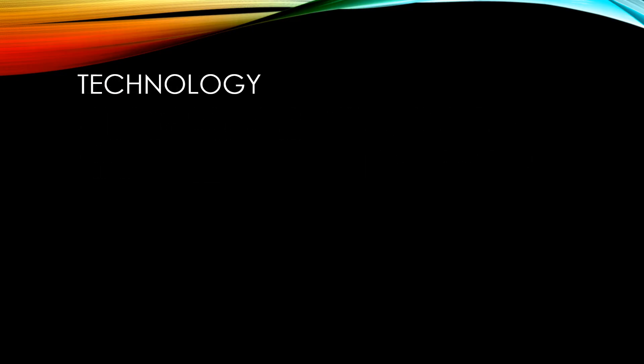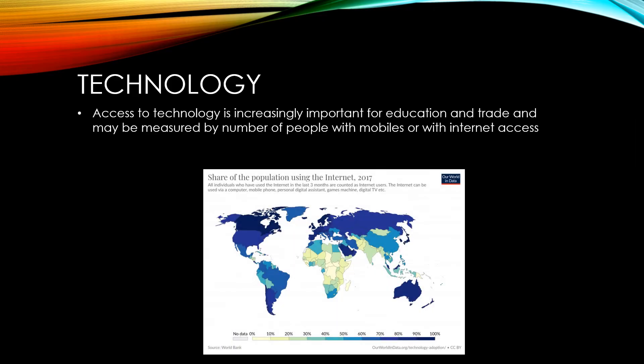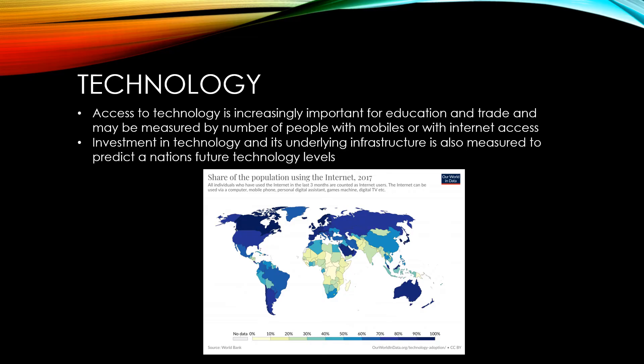Access to technology is increasingly important for both education and trade. This may be measured by things such as the number of people with mobiles or the number of people in a country with internet access. Investment in technology and the underlying infrastructure for technology is also measured to help predict a nation's future technology levels.